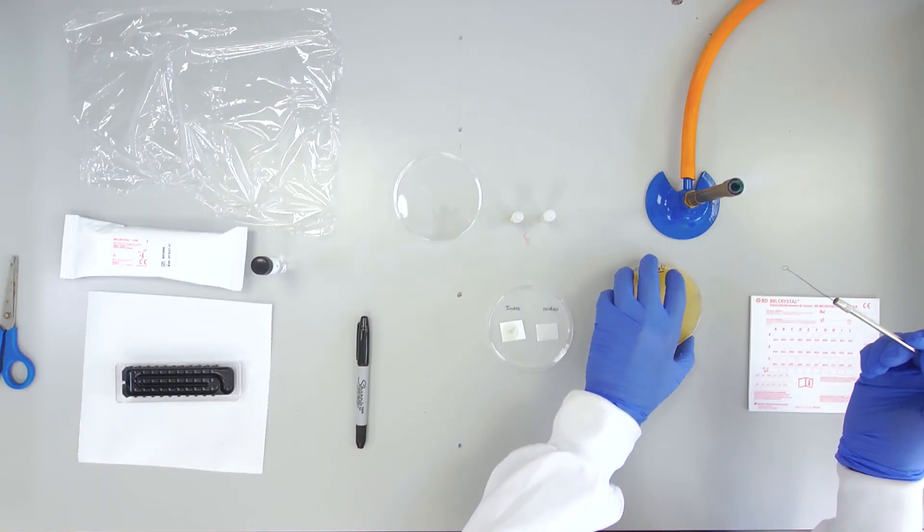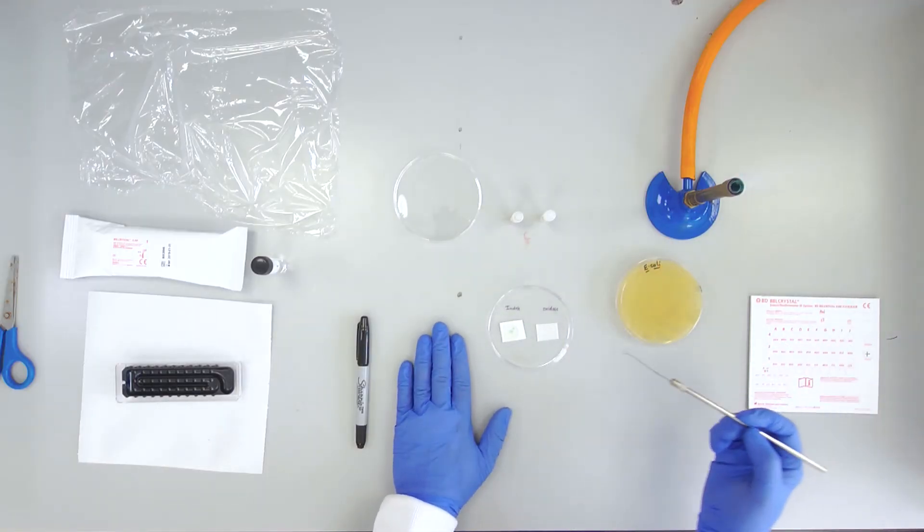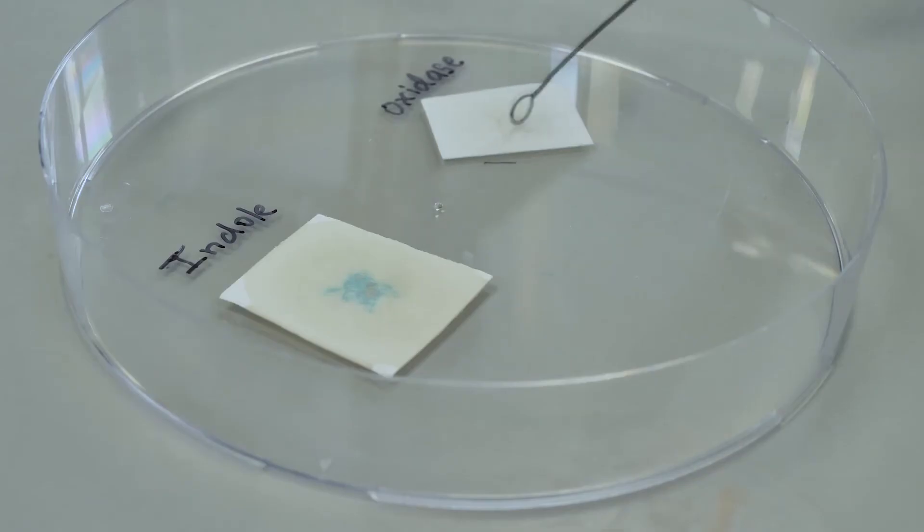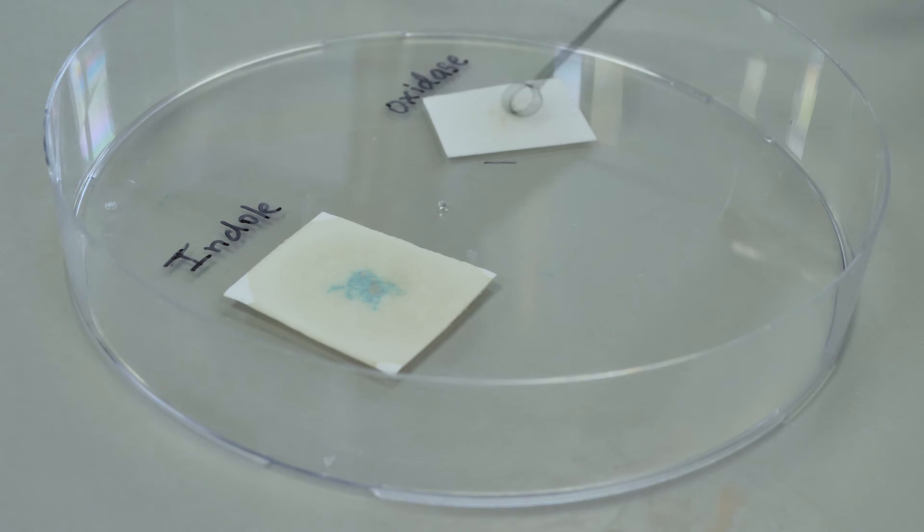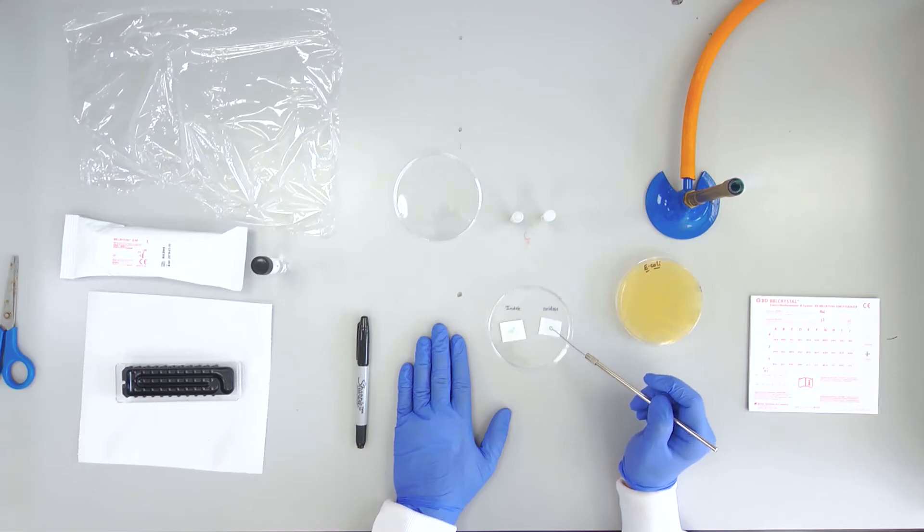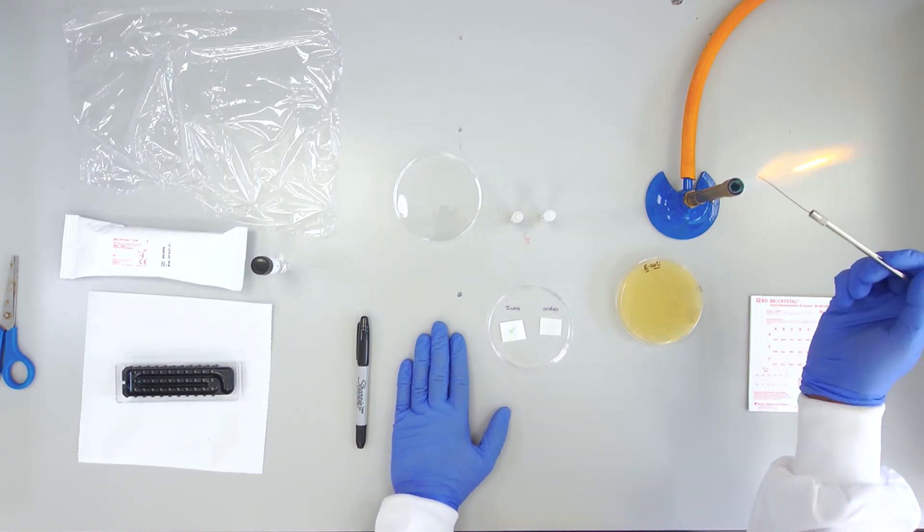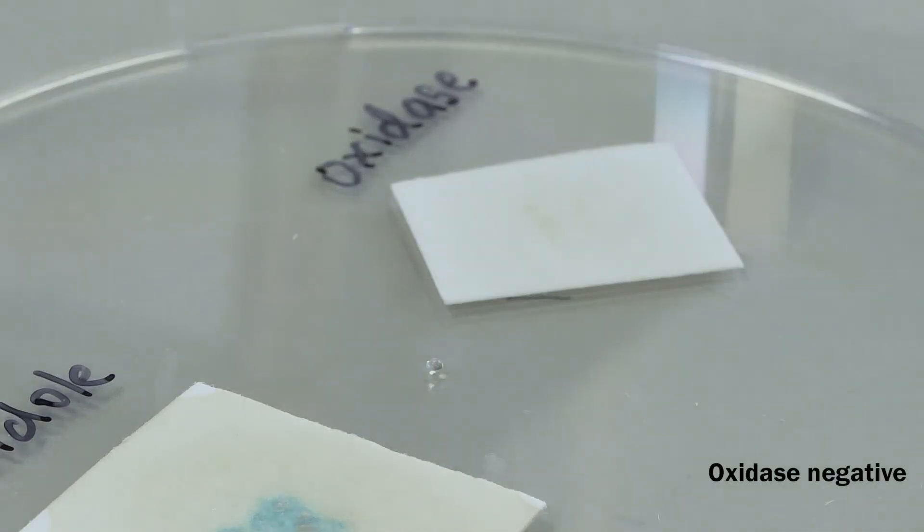A purple violet colour within 30 seconds indicates an oxidase positive result. No colour change indicates that the culture is oxidase negative.